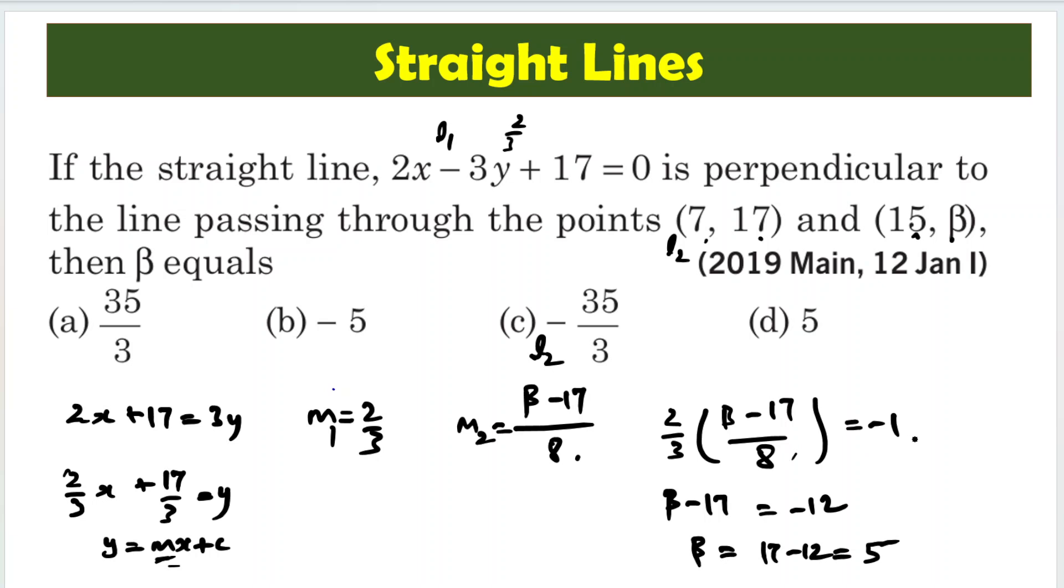So beta is equal to 17 minus 12, which is equal to 5. So 5 is the correct answer. It's such a basic problem. We just need to know how to calculate slope of a line and slope from two different points.